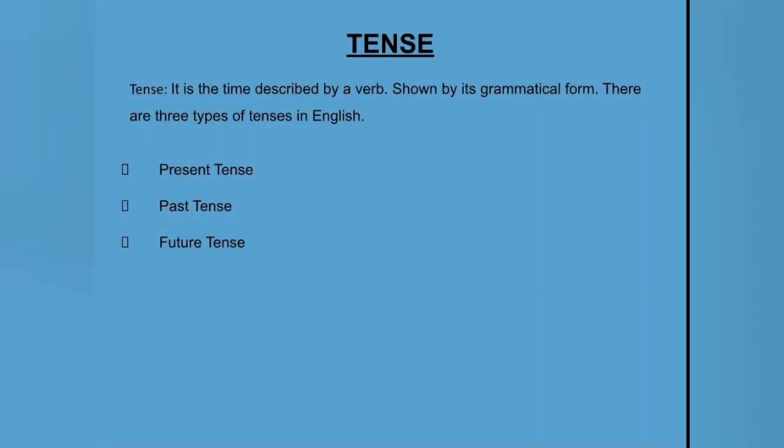Tense. It is a time described by the verb, shown by its grammatical form. There are three types of tenses in English: present tense, past tense, and future tense.